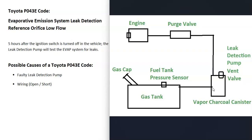The charcoal canister acts as storage for the gas vapors. Located on the charcoal canister are some different components — there's going to be a vent valve, and this is also where the leak detection pump is located. A hose then goes from the tank up to the top of the engine to what's called a purge valve. The purge valve stays closed when the engine is off so gas vapors don't escape, then opens when the engine is running so all the gas vapors go into the engine and get burned off.